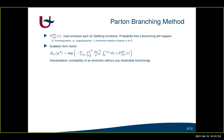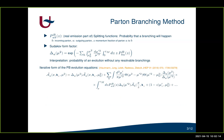The parton branching method describes its evolution equations in terms of splitting functions — probabilities that a branching will happen — and Sudakov form factors, which represent the probability of evolution without any resolvable branchings. The parton branching evolution equations can be written in iterative form. On the left-hand side we have the TMD of flavor a evaluated at scale mu. The first term contributing to this distribution includes all partons a that have evolved from scale mu_0 to mu without any resolvable branchings, hence the Sudakov form factor appears.